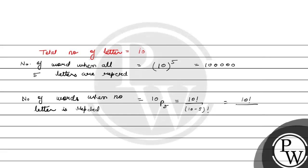Now let's find the number of words when no letter is repeated. For this we apply the permutation concept, where n is 10 and r is 5. So it is 10P5 = 10 factorial upon 10 minus 5 factorial, which is 10 factorial upon 5 factorial.